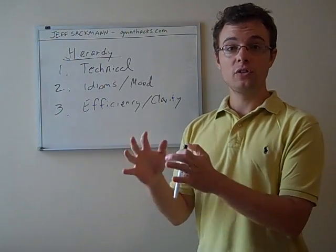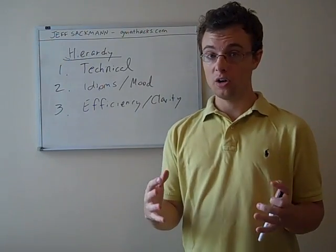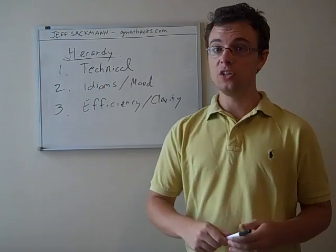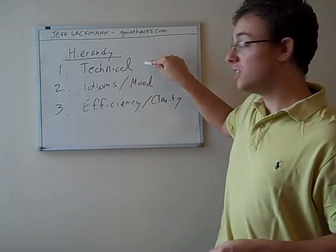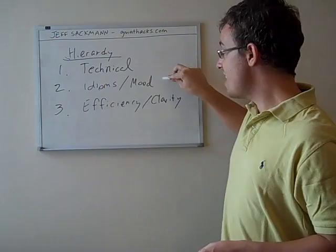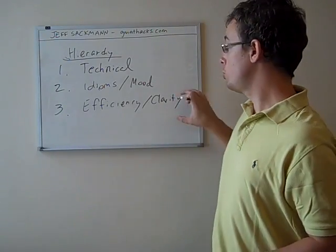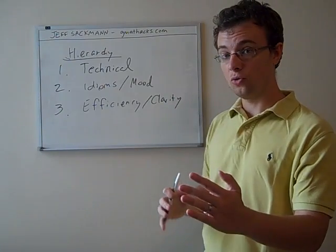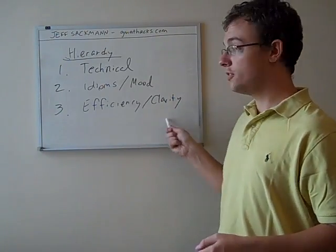So if you're in a situation where all of the remaining answer choices look wrong for various reasons, and I guarantee you will be in that position at some point, first eliminate the technical errors, then eliminate the mood or idiom errors. And only then, only if you have the choice between an efficient answer choice and an inefficient answer choice, eliminate the third tier errors.